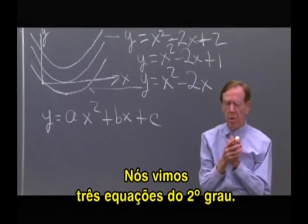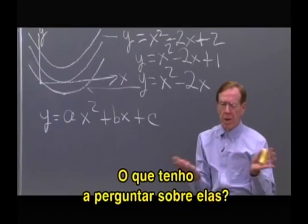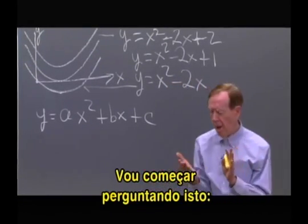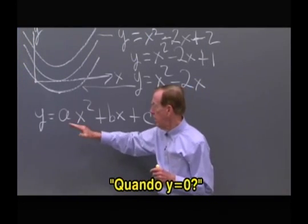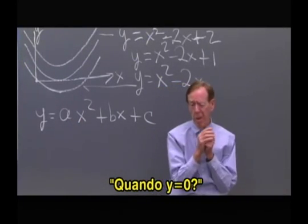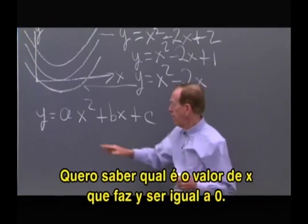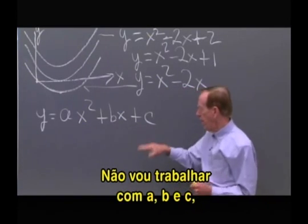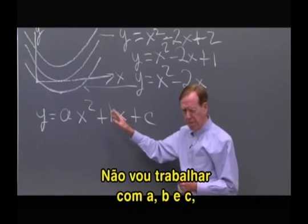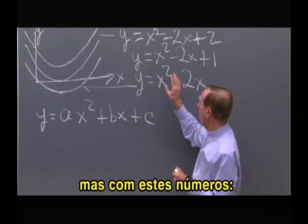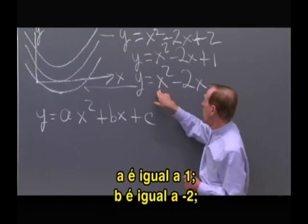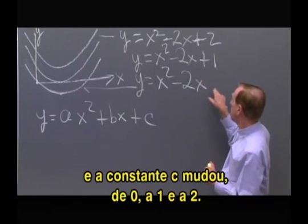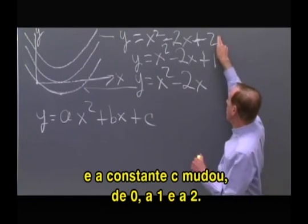So those are three particular quadratics. And what do I ask you about them? Let me start by asking: when is y zero? I'm looking for the x's that produce a zero here. I'll work with these numbers where a was 1, b was minus 2, and c changed from 0 to 1 to 2.